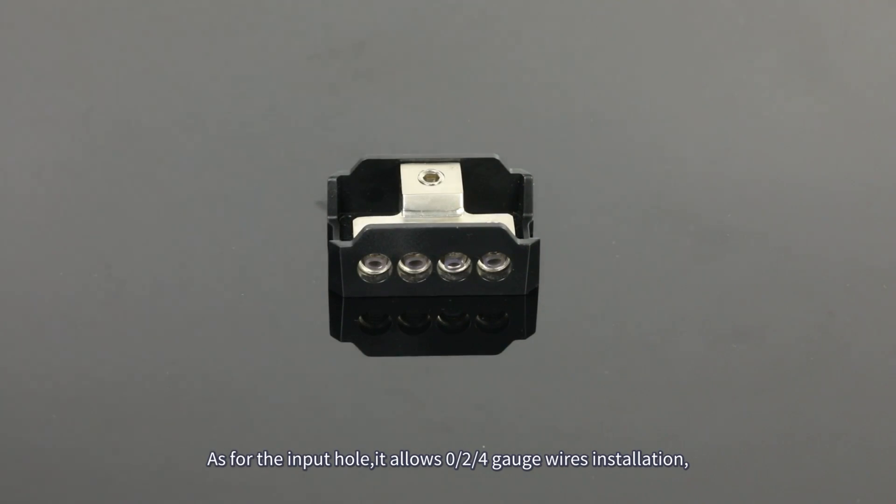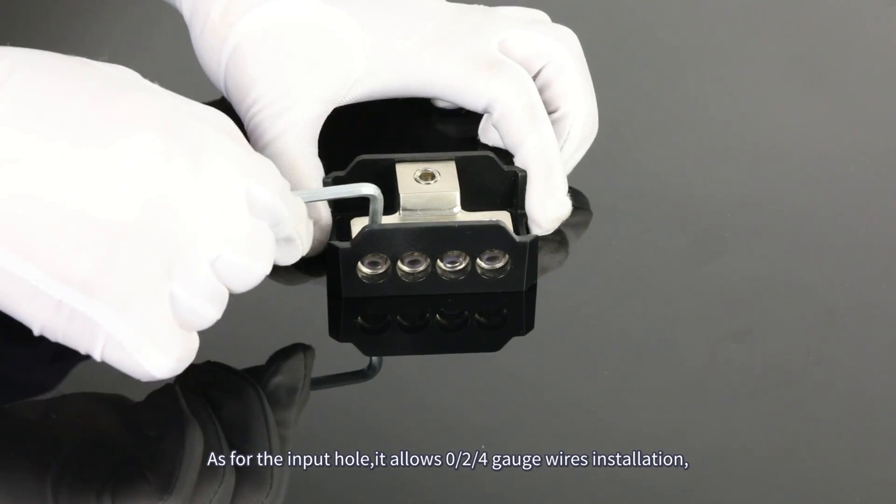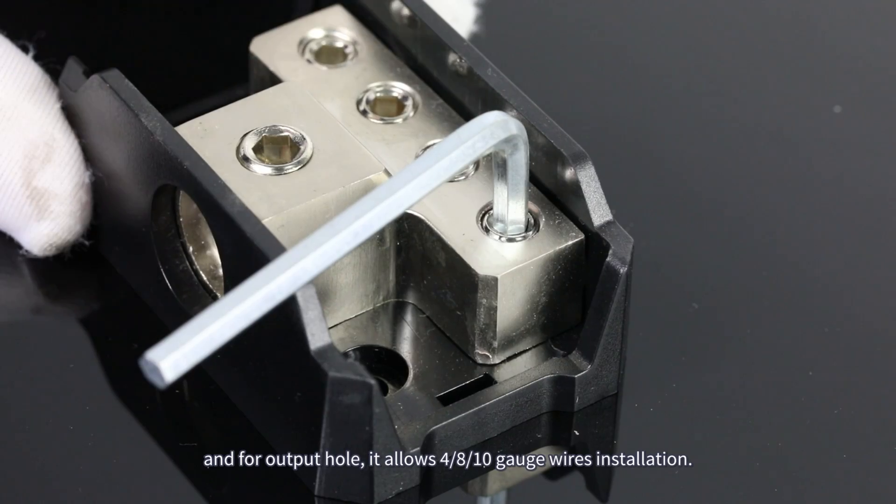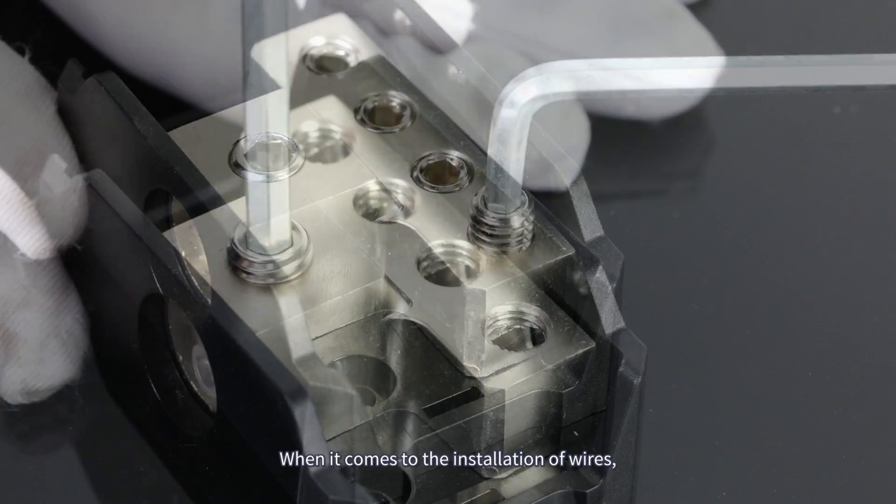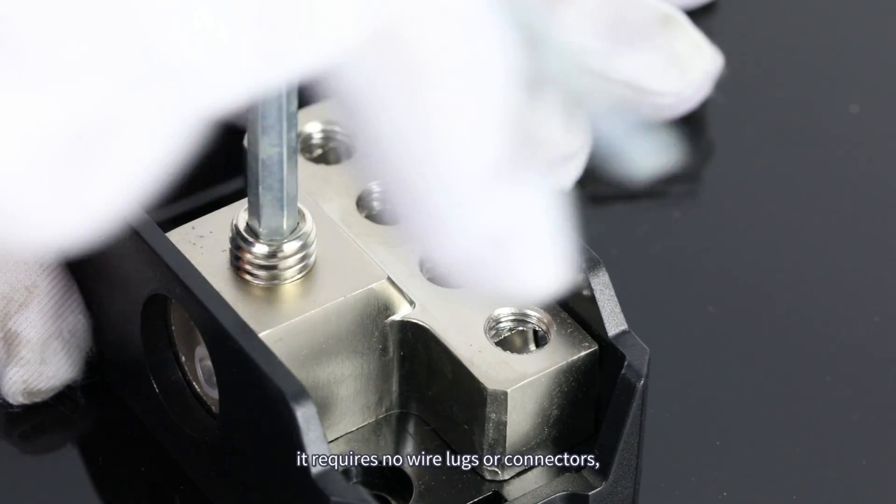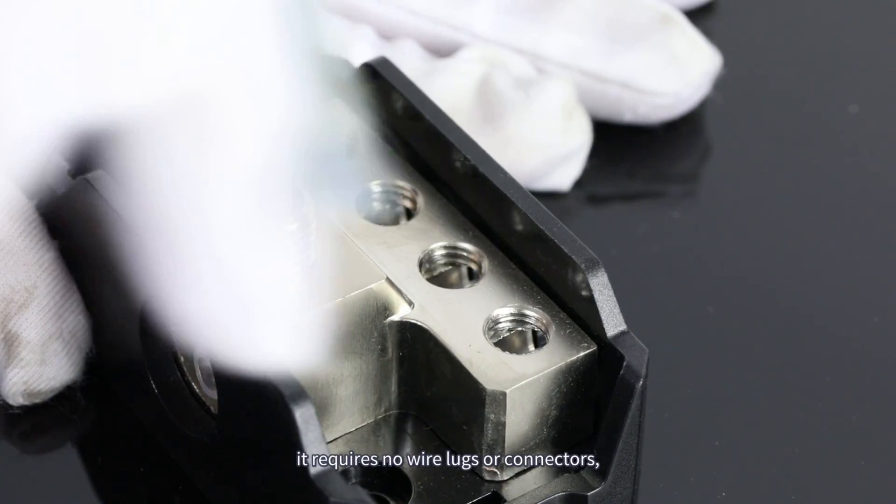For the output hole, it allows 4, 8, and 10 gauge wires installation. When it comes to the installation of wires, it requires no wire lugs or connectors, just need to stick suitable gauge wires in the hole.